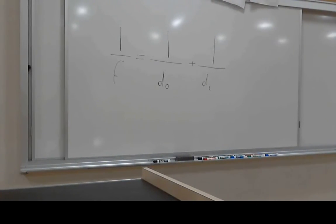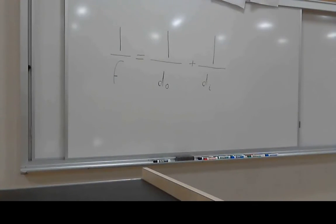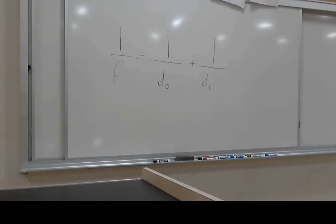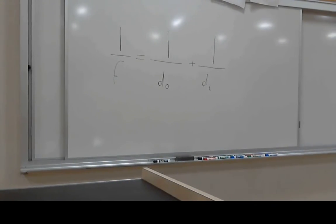In the last portion of the optics lab, we will verify the equation governing thin lenses. The mnemonic is 'if I do, I die.' F is the focal length intrinsic to the lens. Do is the distance from the lens to the object. Di stands for the distance to the image formed from the lens.